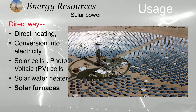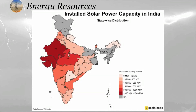Solar furnaces use the technology of reflection from mirrors. Many mirrors are installed to reflect radiation to the central part of a tower, where the temperature goes very high — almost above 1000°C — and this high temperature can be used for various purposes. In India, Rajasthan and Gujarat have the highest solar power capacity, with more than 1000 megawatts installed, while the lowest capacity is in hilly regions like Jammu & Kashmir and the eastern parts of the country.